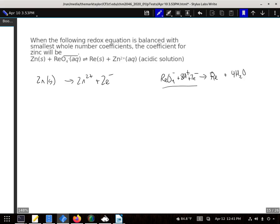All right, so when we combine these, we need to multiply all these guys by two, all these by seven, because the common number of electrons is 14.